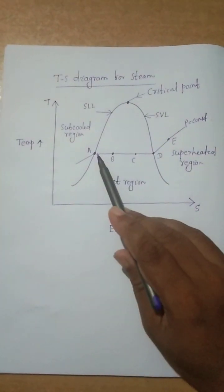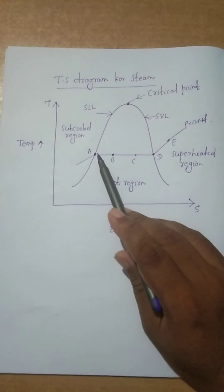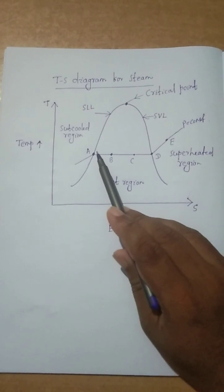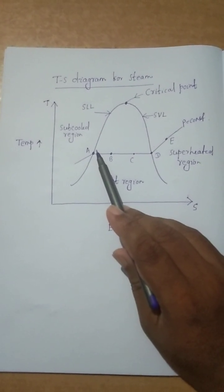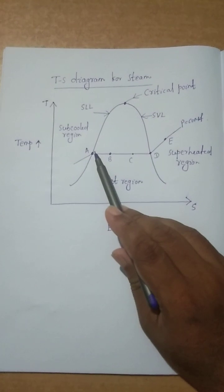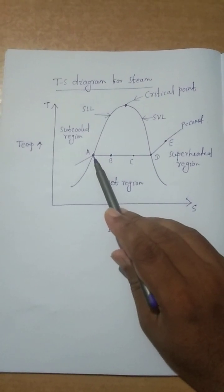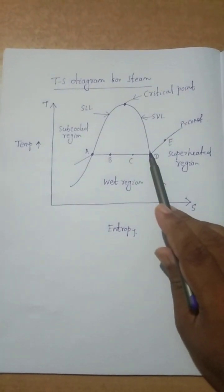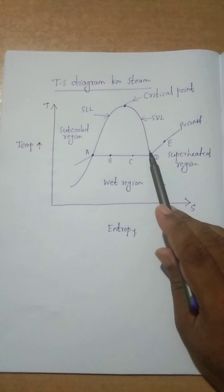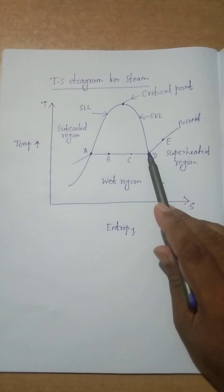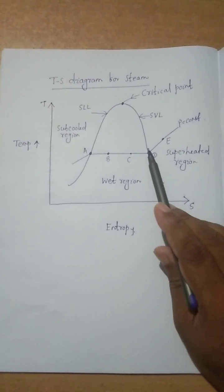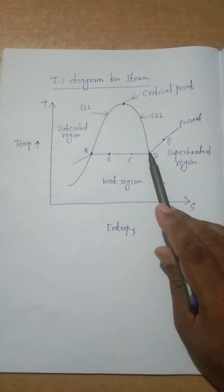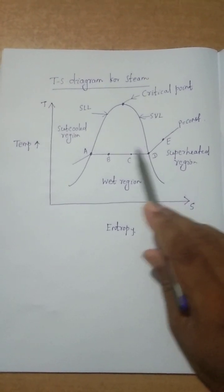If the working substance is present on the saturated liquid line, then the working substance is 100 percent liquid. If the working substance is present on the saturated vapor line, then this is 100 percent vapor.